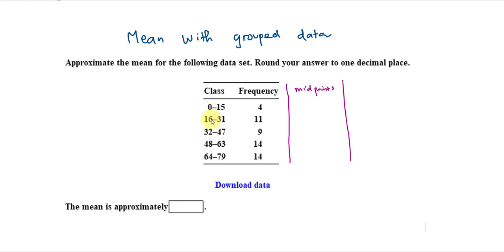So, 0 plus 16, divide by 2, that will give me 8.